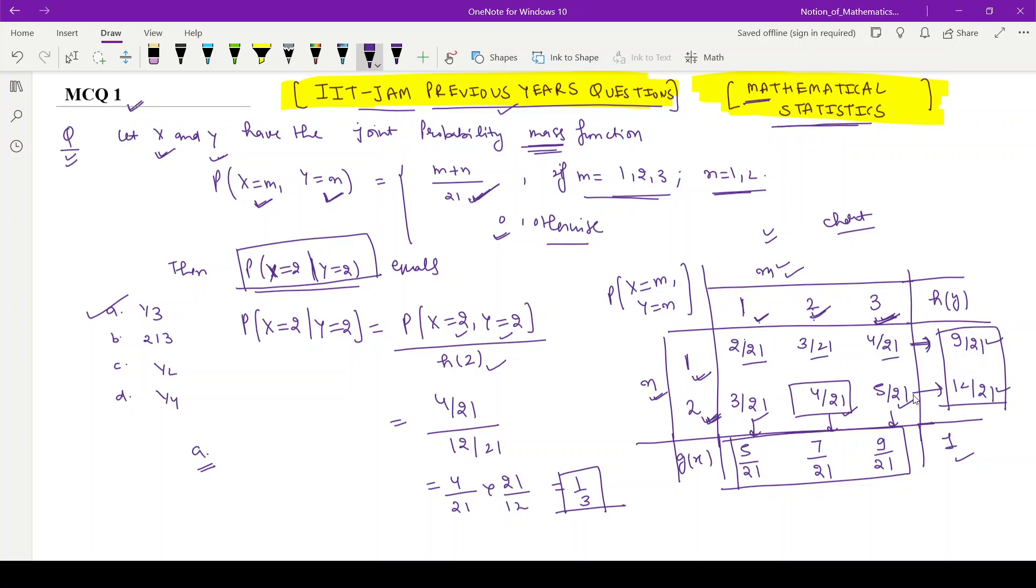Then row-wise summation is done: 9/21, 12/21. All these entries' summation is provided by the total probability.